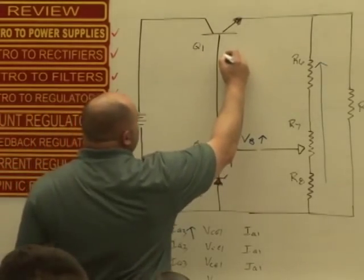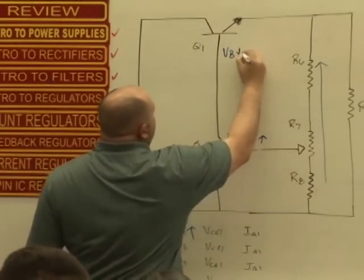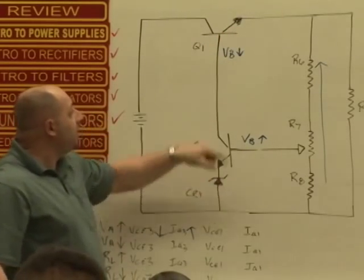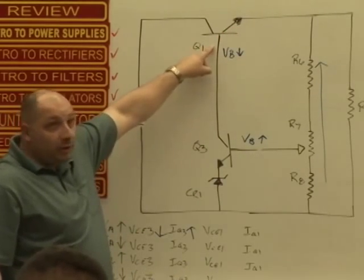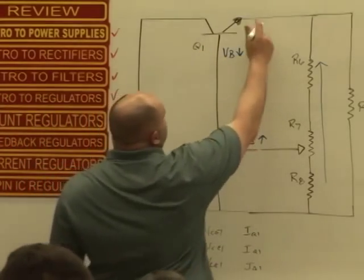That decrease in potential at the collector is going to cause what at the base of Q1? Decrease. Now I've got to decrease the base. It's still an NPN transistor. Q1 is going to conduct less.